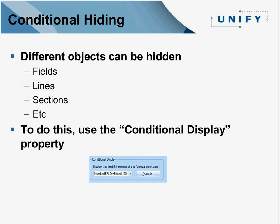Formulas can also be used for hiding and showing different objects — at the individual input item field level, labels, lines, or entire sections. You can make the report very dynamic based on what you want to show the user. Conditional hiding uses a Boolean value to determine whether or not to show something. The conditional display always works the same way: if the formula returns a non-zero value, it will display the value. That could be a field, a line, or an entire section.